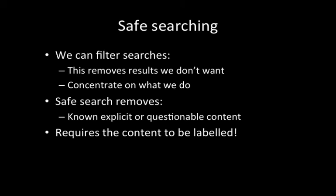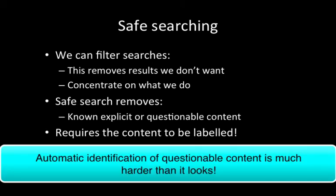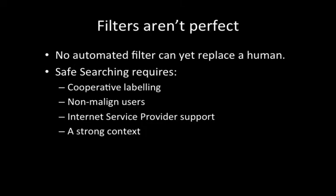We can extend this with the notion of safe search, where we can say we don't want to see anything that's explicit or questionable. But this actually requires that somebody has gone to the trouble of labelling the content, because while we can detect rude words and things like that, images are very, very hard to label as offensive or not. It's very important to realise that unfortunately, no automated filter can actually replace a human being. To make safe searching work, you require people to clearly label that material should not be shown to people of a certain age or people who don't want to see that particular type of content — which means you actually require people to be nice rather than malign.